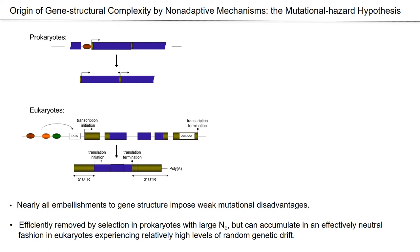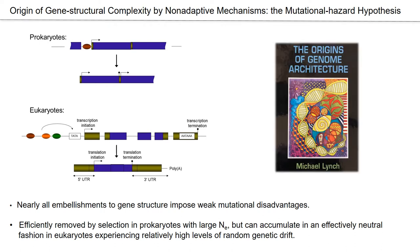On the other hand, in eukaryotes — particularly metazoans and land plant genomes — genes are subdivided by large numbers of long introns, transcripts have long UTRs on the front and hind ends, complex regulatory regions, excess intron DNA, and so on. The basic idea is that all embellishments to gene structure impose weak mutational disadvantages by increasing the ways in which mutation can break a gene. This operates like a weak form of selection. Such embellishments can only be removed from populations with large effective sizes, but can accumulate in an effectively neutral fashion in eukaryotes with smaller NE experiencing relatively high levels of random genetic drift. I summarized my ideas on this, as well as the genome architectural differences, in a book published a few years later.